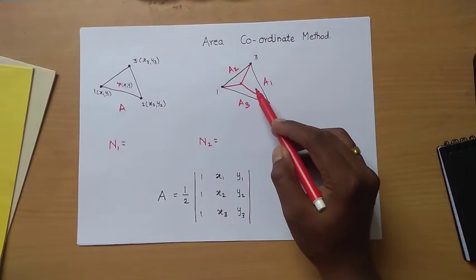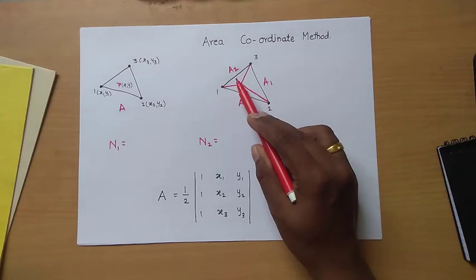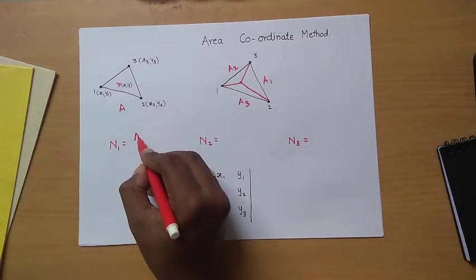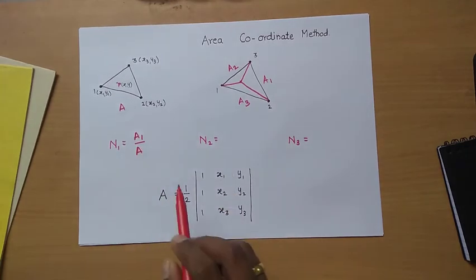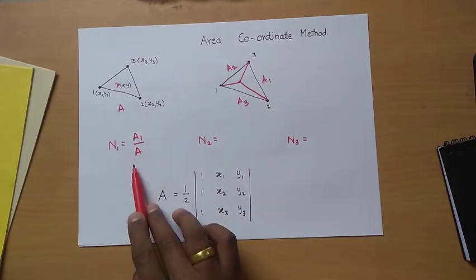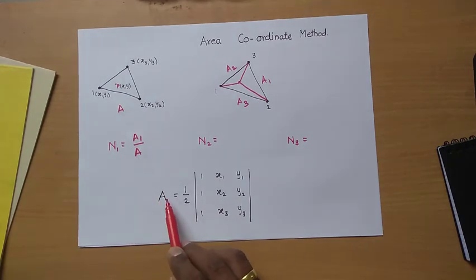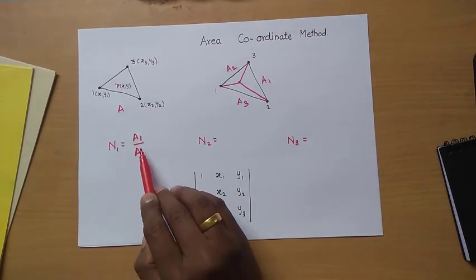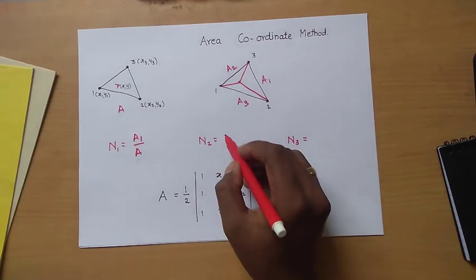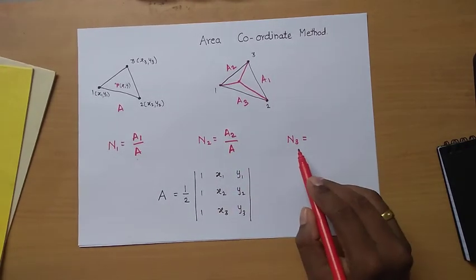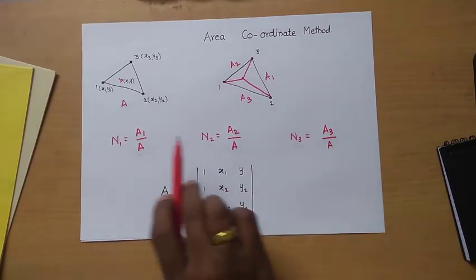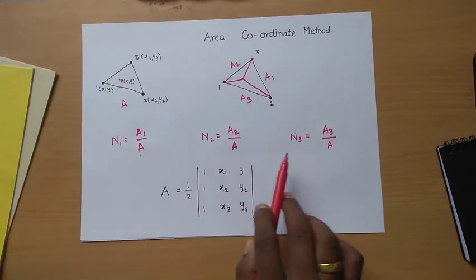Similarly, we have these three triangles with areas A1, A2, and A3, which we can find using the same method. Now for the shape functions: shape function N1 is defined as A1 divided by A. The total area A is always larger than A1, so we get a fractional value, and the maximum value of N1 is 1. Similarly, N2 equals A2 divided by A, and N3 equals A3 divided by A. These are the three shape functions for the three nodes of this triangular element.